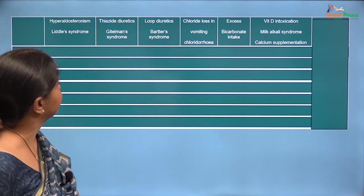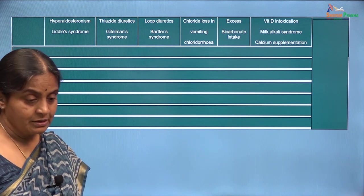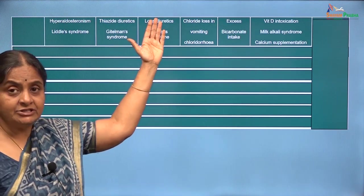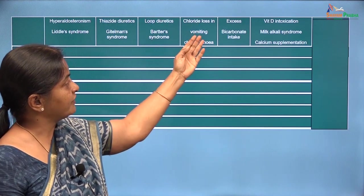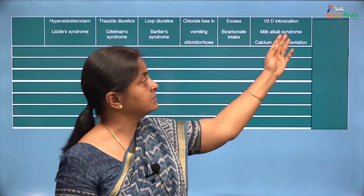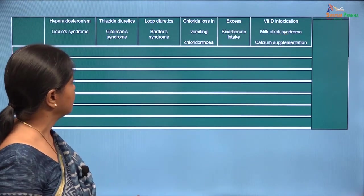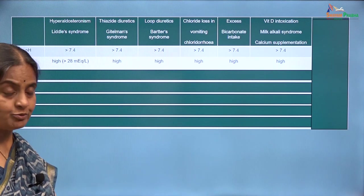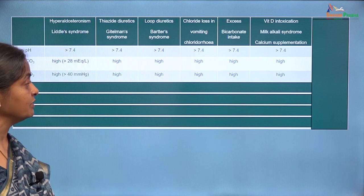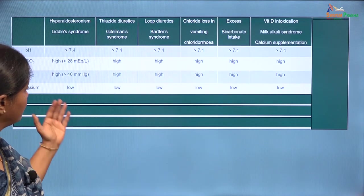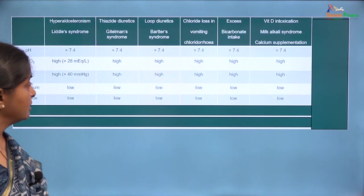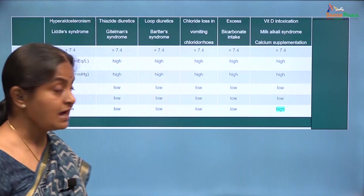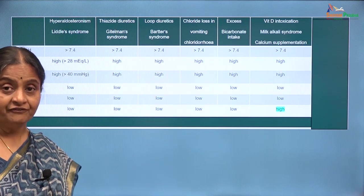To summarize, here we have the causes of metabolic alkalosis: conditions involving increased sodium reabsorption through ENACs, primary chloride loss, excess bicarbonate intake, and hypercalcemic states. Regarding investigations: pH is high in all of them, bicarbonate is high in all of them, and PCO2 will be high in all of them as part of the syndrome of metabolic alkalosis. Potassium will be low in all states of metabolic alkalosis. Chloride will be low. When it comes to calcium, in hypercalcemic states calcium will be high, whereas in other conditions there is a reduction in free calcium.